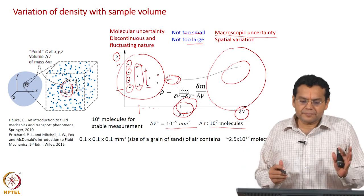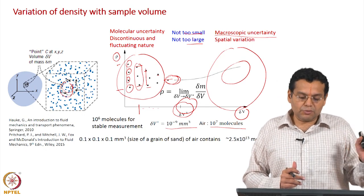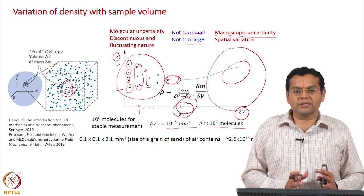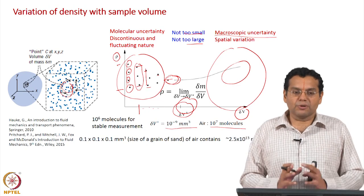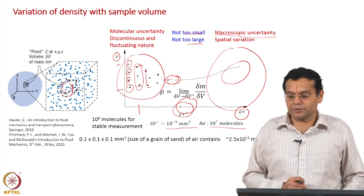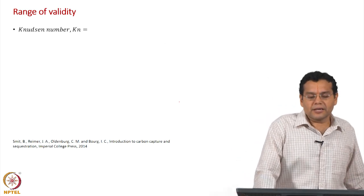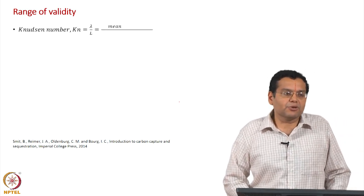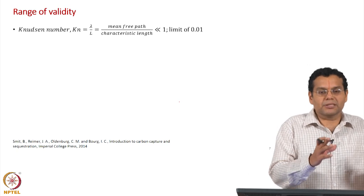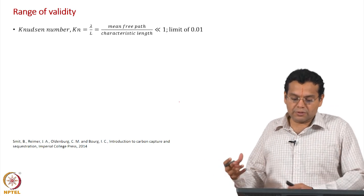So what we discussed is the variation of density with sample volume. We do not want molecular uncertainty, we do not want macroscopic uncertainty; we want a small volume that is neither too small nor too large, with enough molecules so there are no fluctuations, while still being able to capture spatial variation. How do we quantify this range of validity of the continuum hypothesis? So far we have been discussing qualitatively, and we want to put some numbers to quantify the region over which the continuum hypothesis is valid.